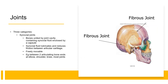There are three categories of joints, and the first category is synovial joints. Synovial joints are the most common type of joints and are found in the shoulder, elbow, wrist, hip, knee, and ankle. These joints are formed by bones united by a joint cavity containing synovial fluid enclosed by a capsule. The synovial fluid lubricates and reduces friction between the articular cartilage, which covers the surfaces of the bones where they meet, allowing for smooth movement and reducing wear and tear on the joint.